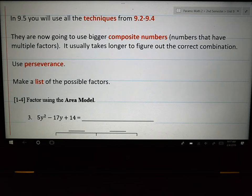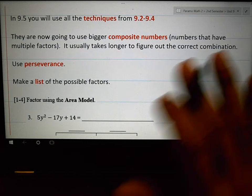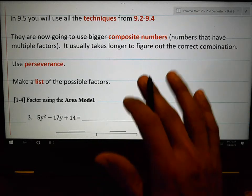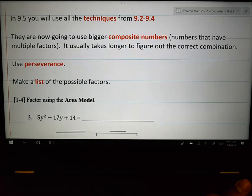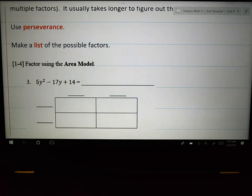So composite numbers are basically things that have multiple different ways for you to break it apart. And you're going to have to find the right combination. So it usually takes a little bit longer. But the techniques are going to be exactly the same as what we did in 9.2, 9.3, and 9.4. I say here, use perseverance. That means stick with it. If your first one doesn't work, try a different one. And if that one doesn't work, try another one. Don't give up. Perseverance will help you get through the hard times of your life if you can persevere through the tough stuff.